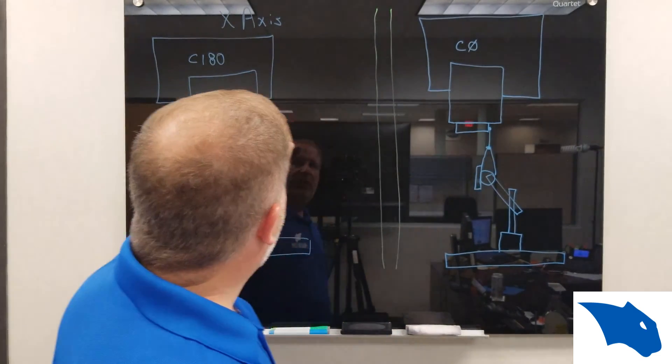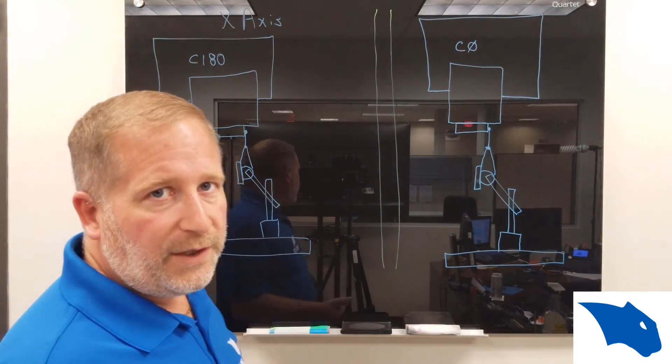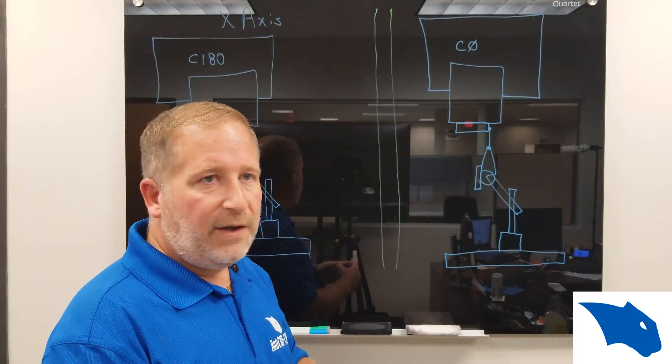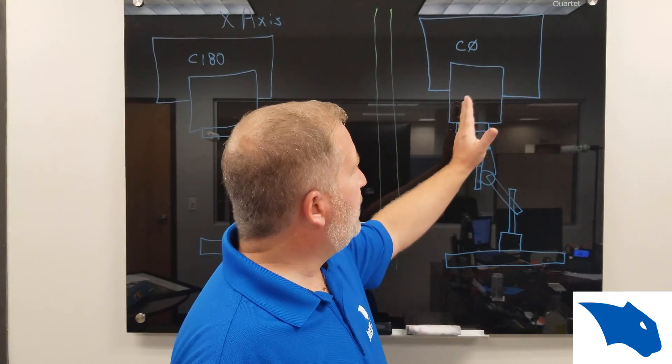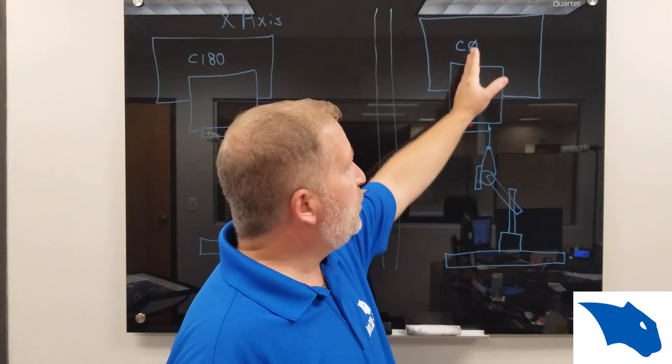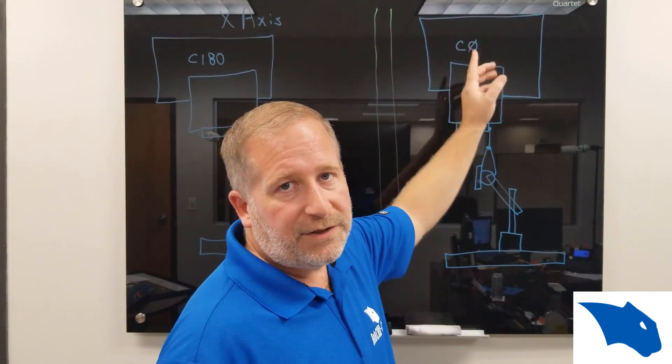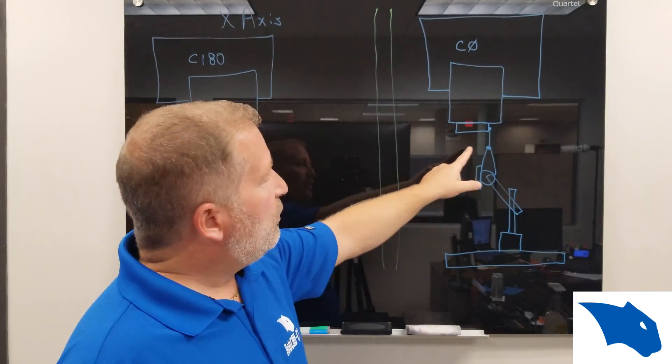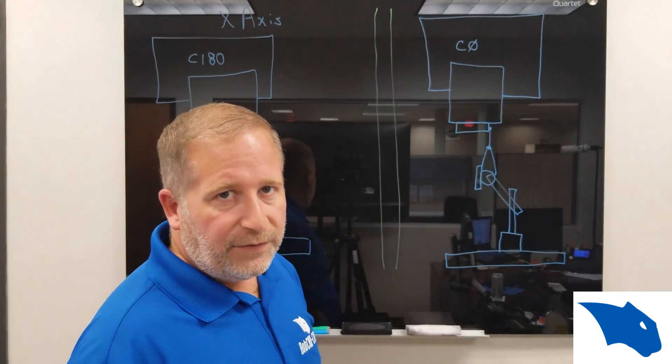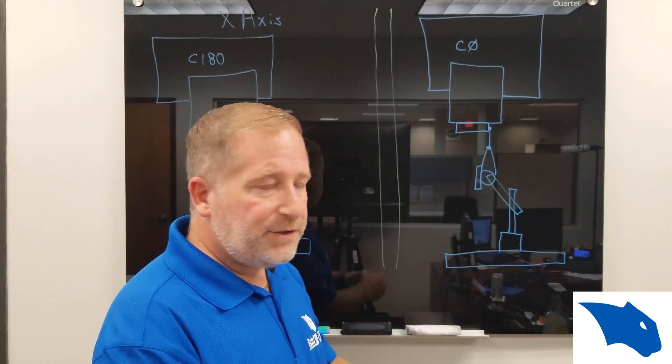then you're going to want to jog the machine away because we don't know if there is a big variation in the alignment of our spindle axis with the c-axis rotational axis. So we don't want to rotate up against the indicator itself in case there's a large variation there.